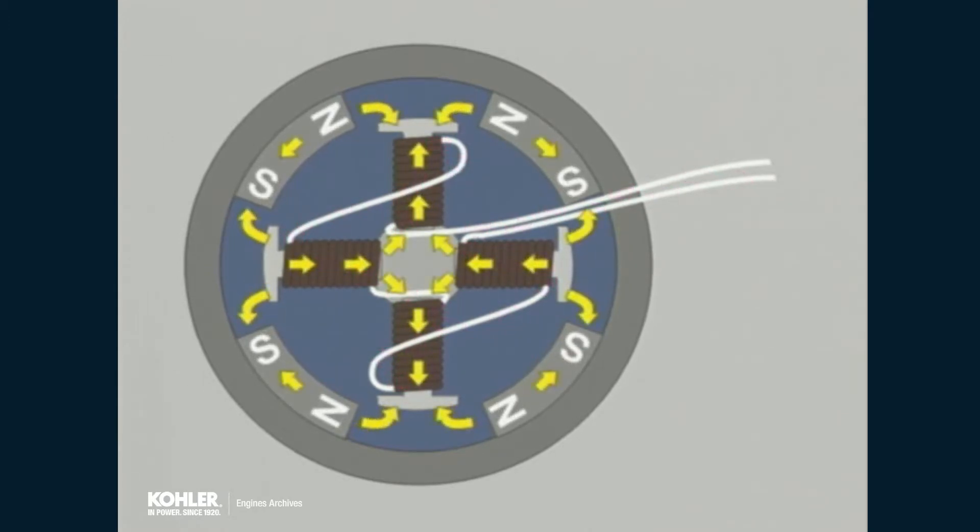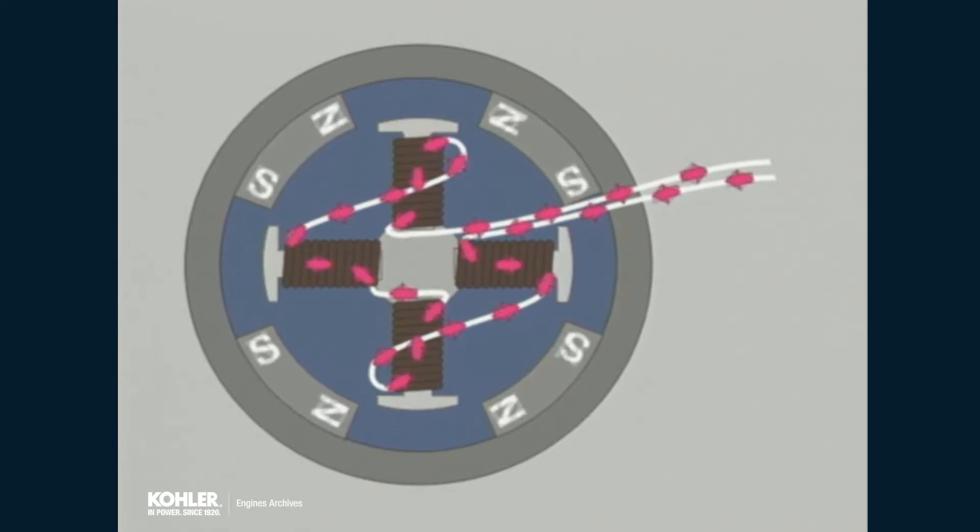As the flywheel rotates and the magnetic poles align with the next post, the direction of the magnetic flux flow reverses. This reverses the direction of the induced current in the stator winding. The result is an alternating current, one direction then the other, repeating constantly as the flywheel rotates.